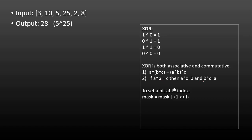One more thing to note: if I want to set the bit at index i in a number, I left shift 1 by i. For example, if i is 2, left-shifting 1 by 2 gives me 100 in binary. If I OR that mask with any other number, it guarantees that particular bit is set — since 0 OR 1 is 1 and 1 OR 1 is 1.